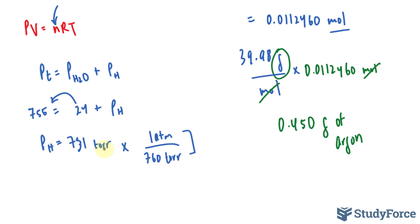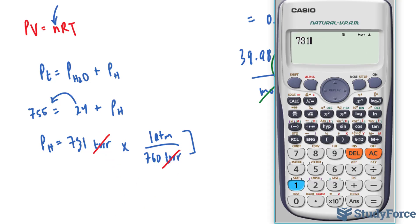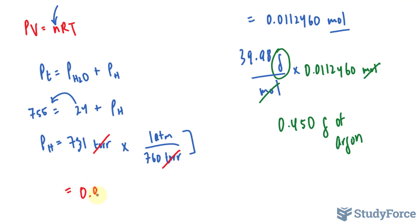By multiplying this number by this number, this cancels out, leaving us with 731 divided by 760, and that is the partial pressure of hydrogen in atmosphere, 0.9618. We should write this to three significant figures because this has three significant figures, but I'll keep this 8 for good measure, that way I don't run into rounding errors. So that is in atmosphere. Now, I can finally use my formula.